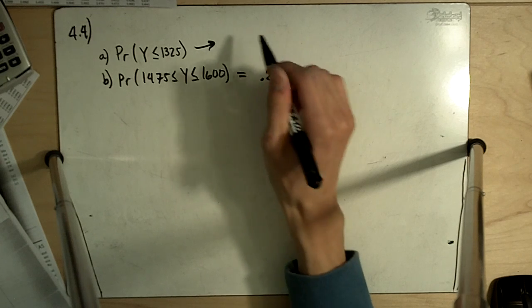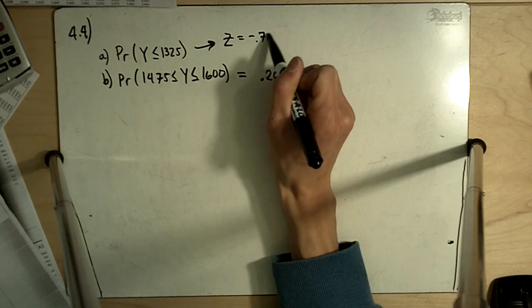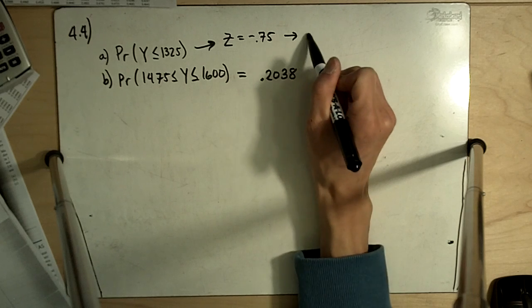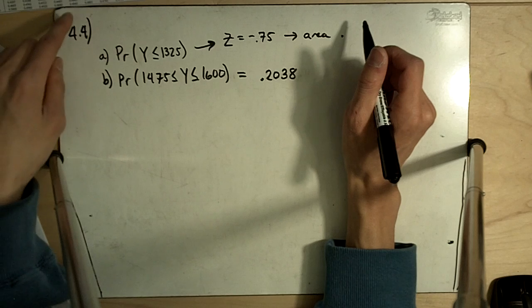Once again, if you recall the problem, Z was equal to negative 0.75, and that corresponds to an area to the left of .2266.